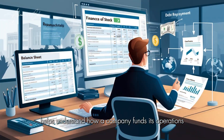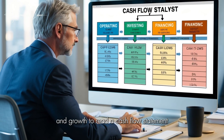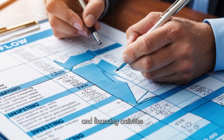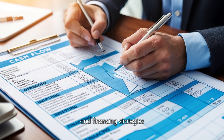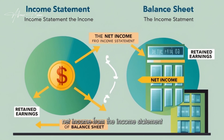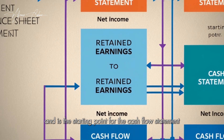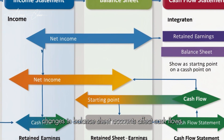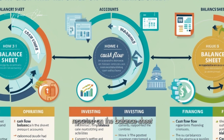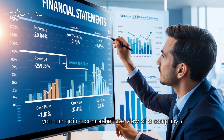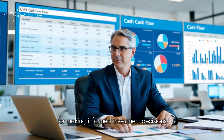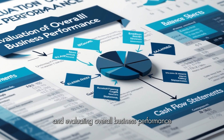Analyzing financing activities helps understand how a company funds its operations and growth. To read a cash flow statement, assess the company's liquidity and ensure financing activities align with the company's growth and financing strategies. Net income from the income statement impacts retained earnings on the balance sheet and is the starting point for the cash flow statement. Changes in balance sheet accounts affect cash flows, and the cash flow statement provides explanations for changes in cash balances on the balance sheet. By understanding these financial statements, you can gain a comprehensive view of a company's financial health, performance, and cash management — crucial for making informed investment decisions, managing financial risks, and evaluating overall business performance.